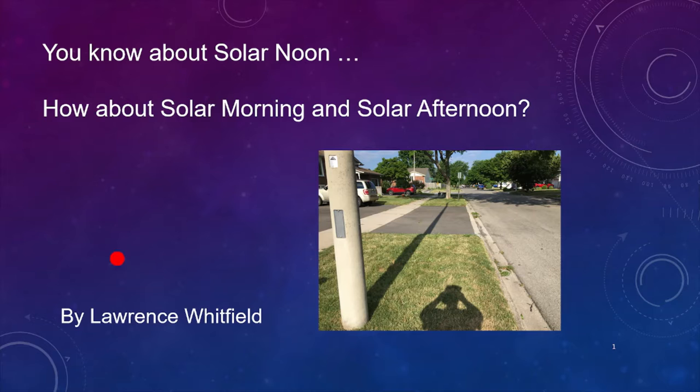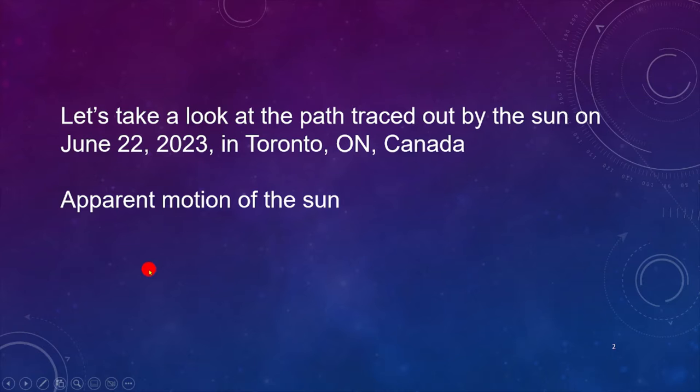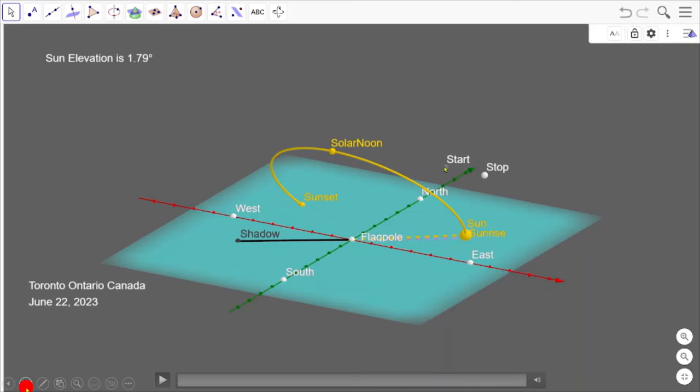Hi, I want to introduce two new ideas: solar morning and solar afternoon. Let's take a look at the path traced out by the Sun in the month of June in Toronto, Ontario. There we see the Sun rising.